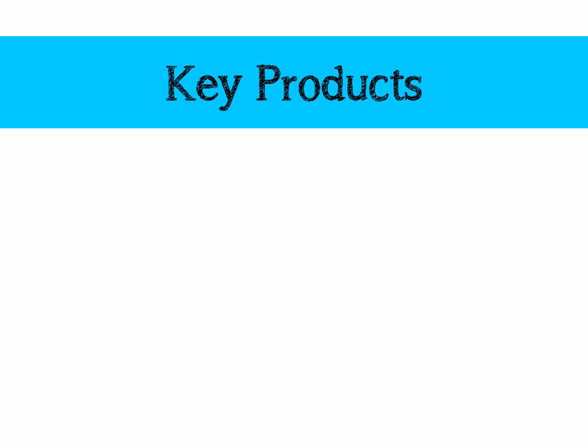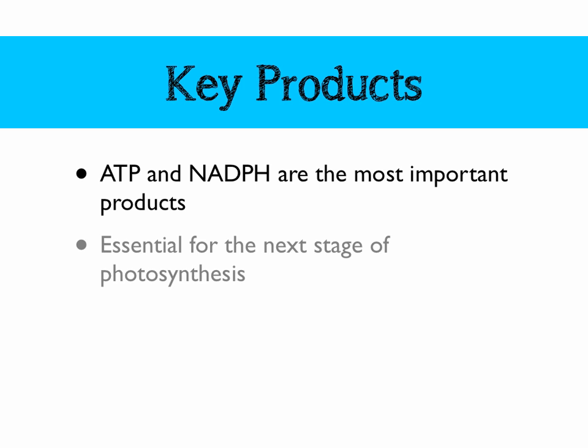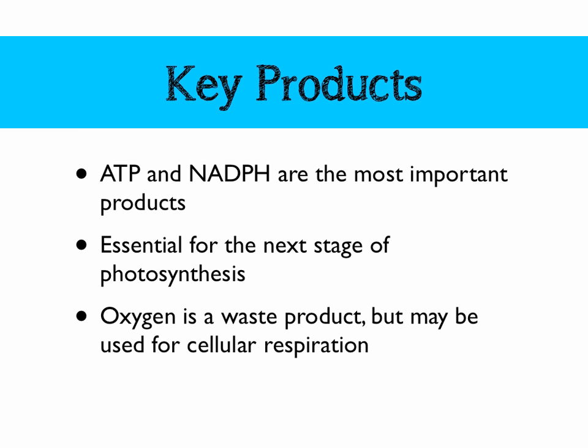The key products from the light-dependent reaction of photosynthesis are NADPH and ATP, and they're essential for the next stage of photosynthesis, which we will look at in another video. Oxygen is a waste product, but it's going to be used for cellular respiration, so it is quite useful to have around.